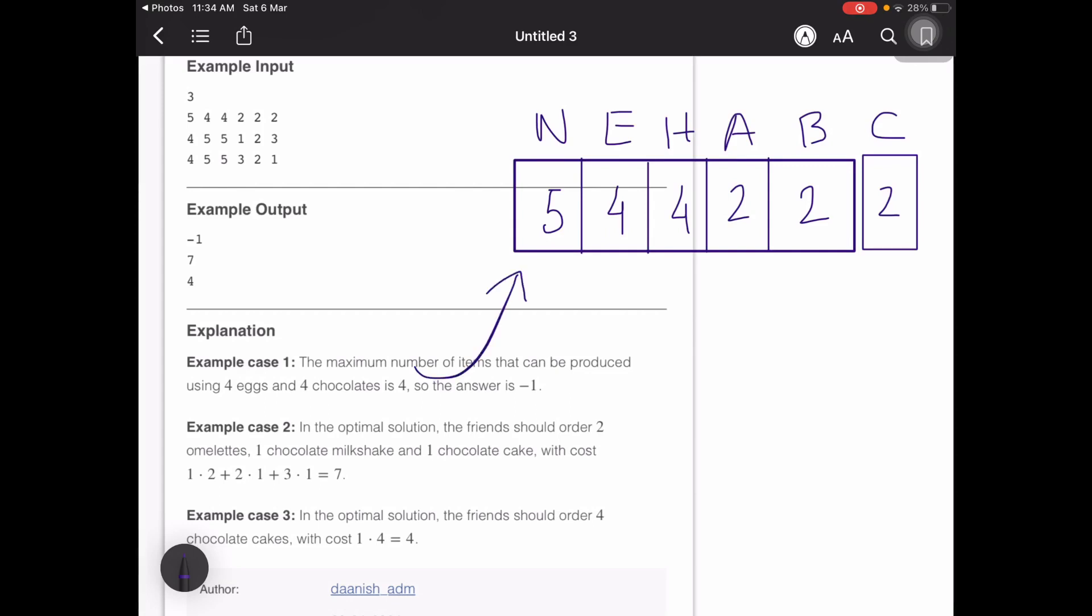If you look at this particular case, we have n friends and the amount of eggs and chocolate bars that are left in the canteen are 4 and 4. First we'll have to check: can we at least make 5 items out of these 4 eggs and 4 chocolate bars?